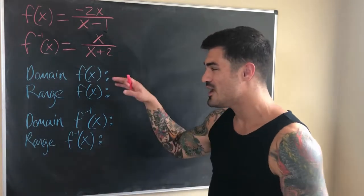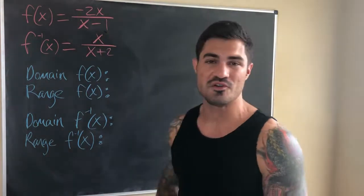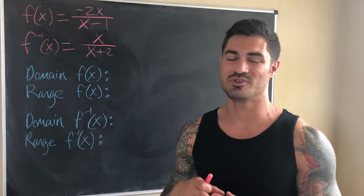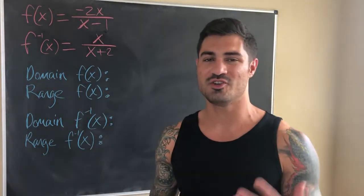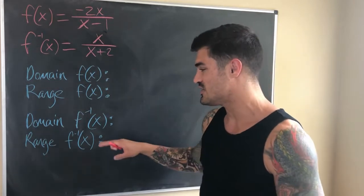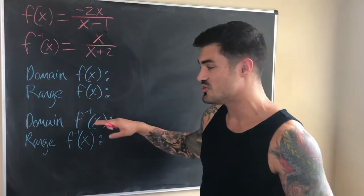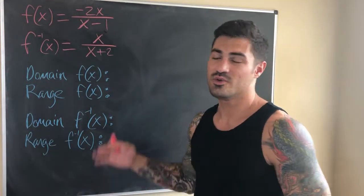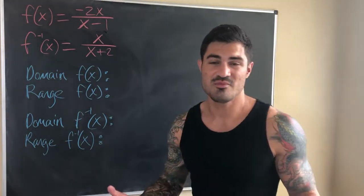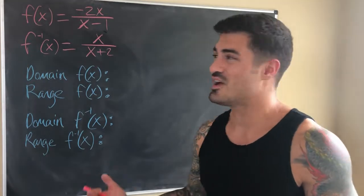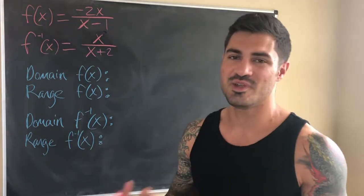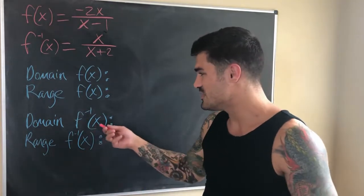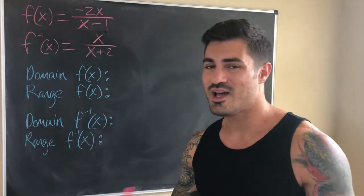The last thing we're going to do is find the domain and range of both the original function and its inverse. We can take advantage of a really cool fact: the domain of a function is the same as the range of its inverse, and the range of a function is the same as the domain of its inverse. So instead of finding four things separately, we really just need to find two. I personally find domain the easiest to find with rational expressions, so I'll find the domain of f(x) and the domain of f⁻¹(x), then copy those down as the corresponding ranges.